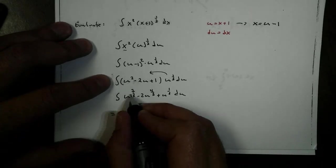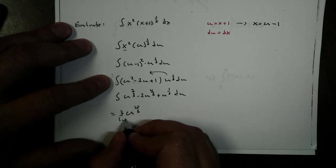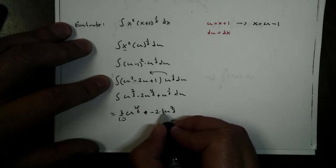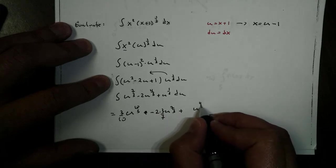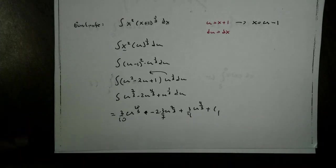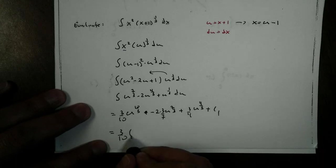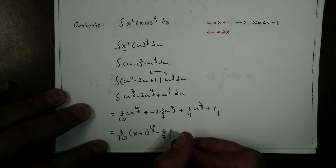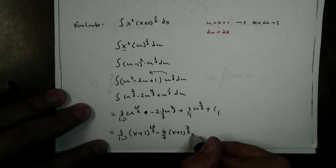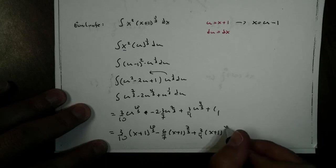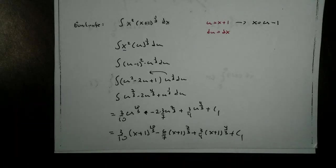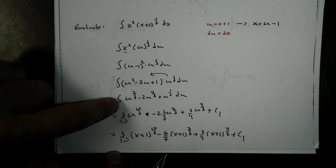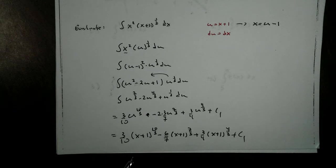And then distribute some more. We would get u to the 7/3 minus 2u to the 4/3 plus u to the 1/3 du. Evaluating your integral, we would add 1, 10/3, that becomes 3/10ths plus, that's minus 2. This becomes u add 1, that becomes 7/3 times 3 over 7 plus this becomes u to the 4/3 times 3 over 4. Don't forget your c. And our last step, replace u. We get 3/10 (x+1)^(10/3) minus 6/7 (x+1)^(7/3) plus 3/4 (x+1)^(4/3) plus your constant of integration. Wow, that is ugly, but it's ours. Notice they aren't that hard to do. Look, watch, ready? Algebra, algebra, algebra, algebra, calculus, algebra. Most everything we do here is algebraic in nature.